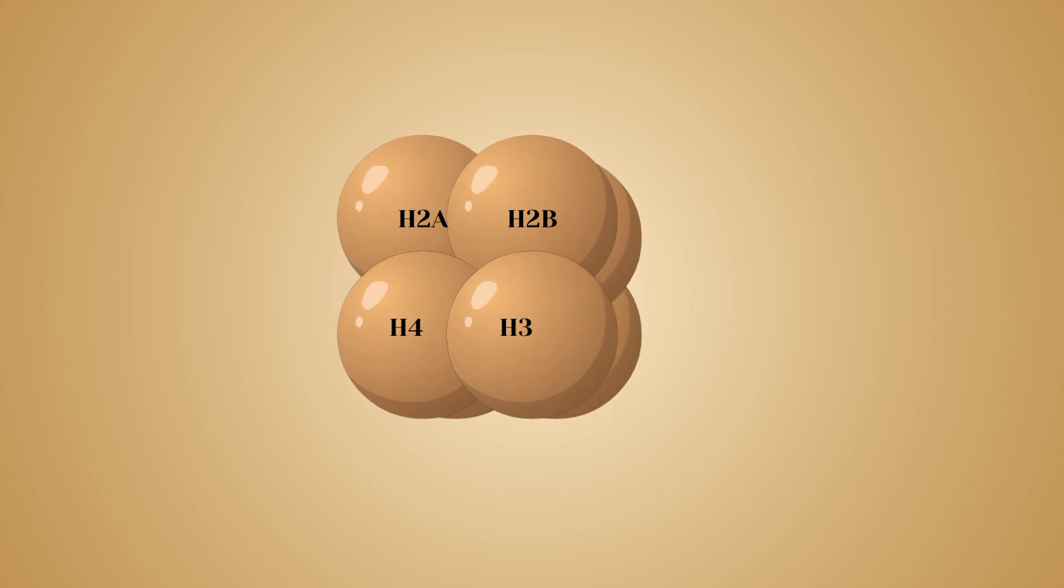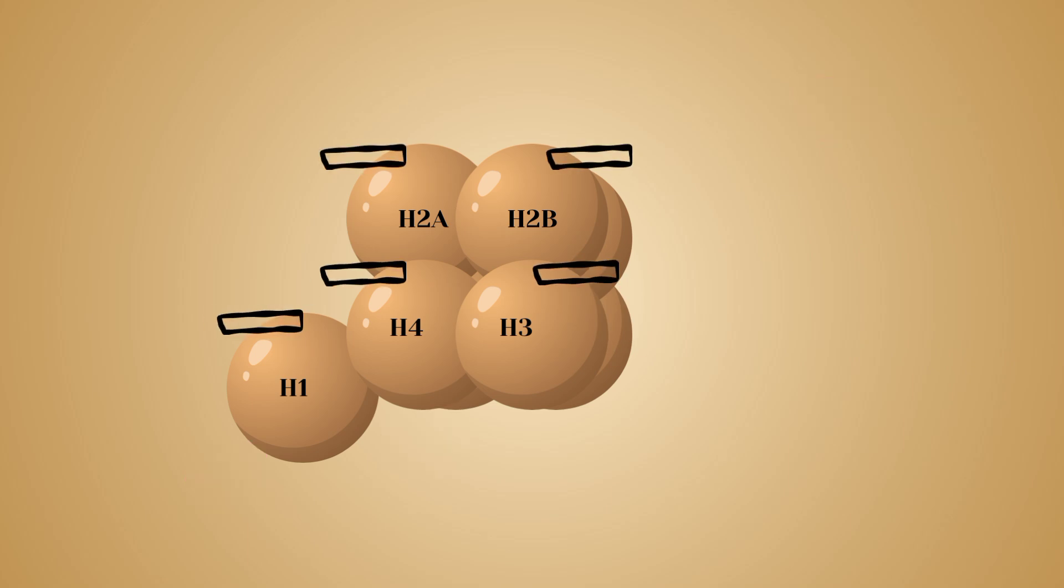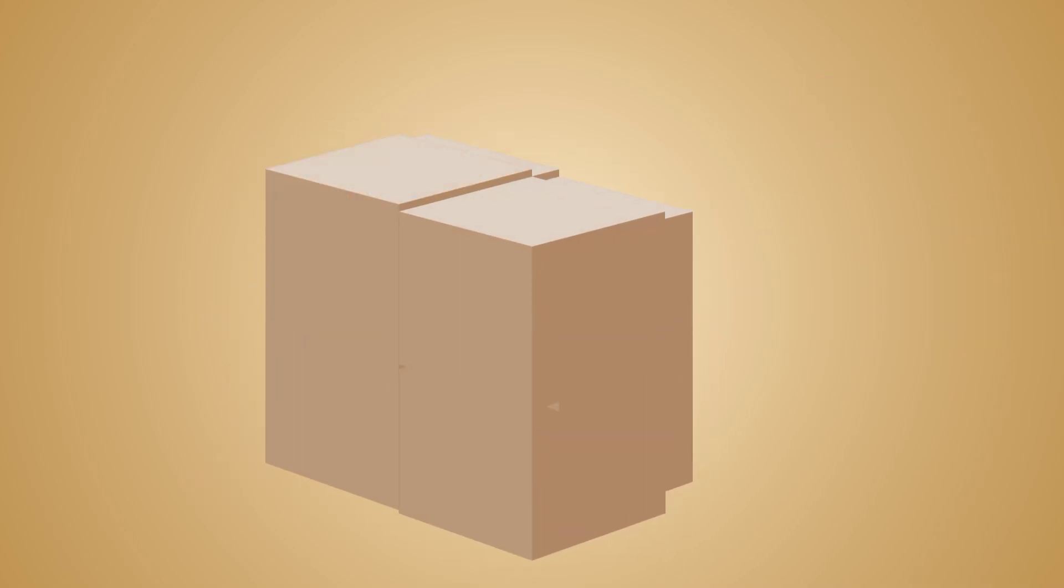Each type of histone undergoes enzymatic modifications such as methylation, acetylation, ADP-ribosylation, phosphorylation, glycosylation, sumoylation, or ubiquitination, which can affect its net electric charge, shape, and structural and functional properties of histones as well as chromatin.